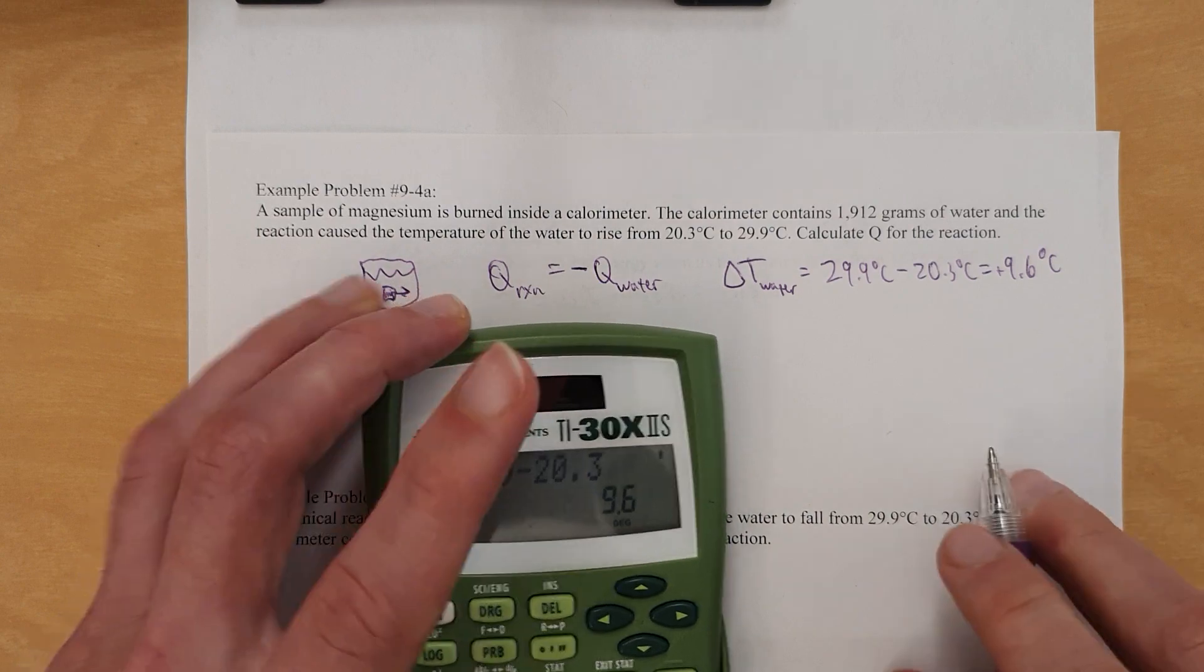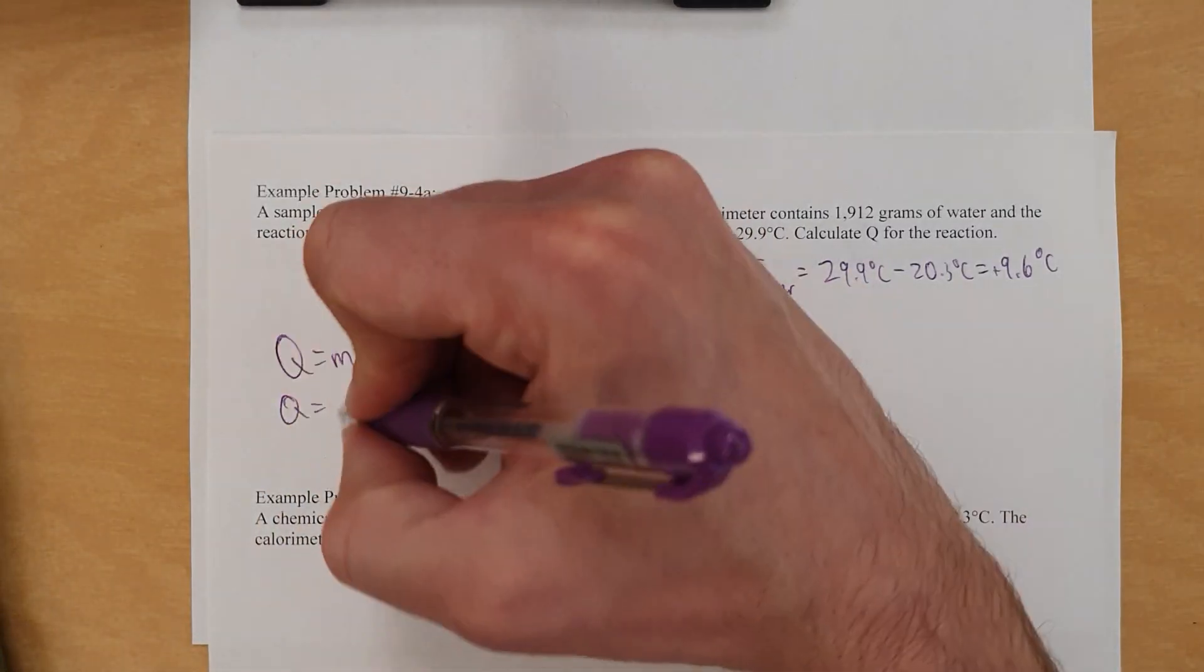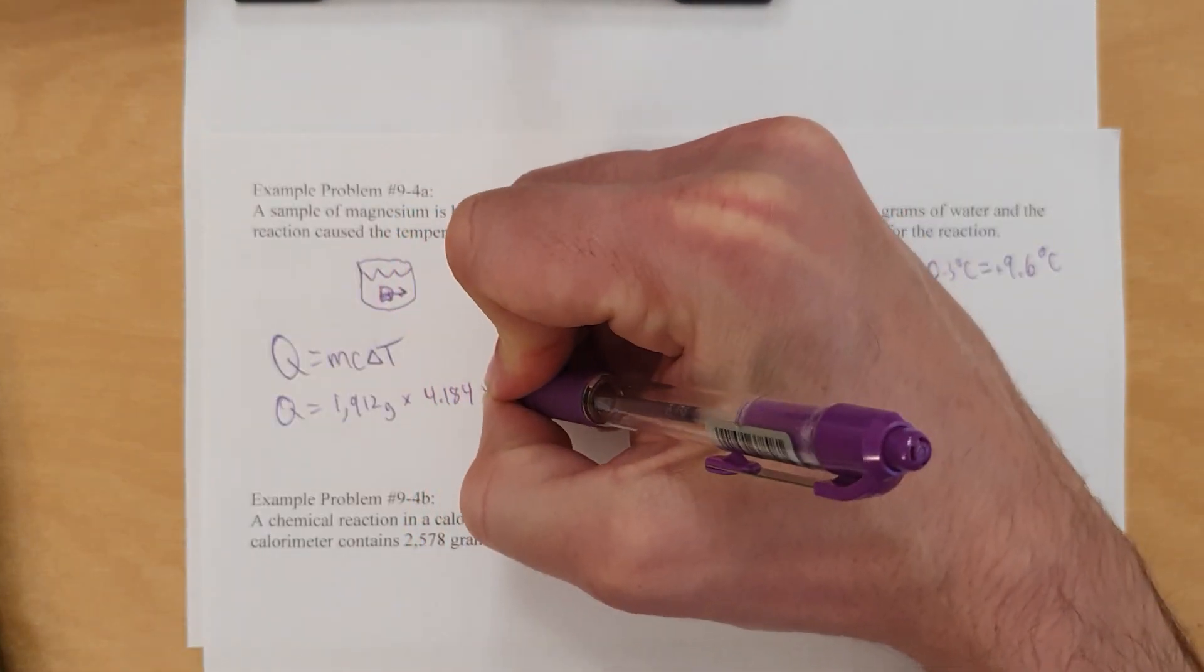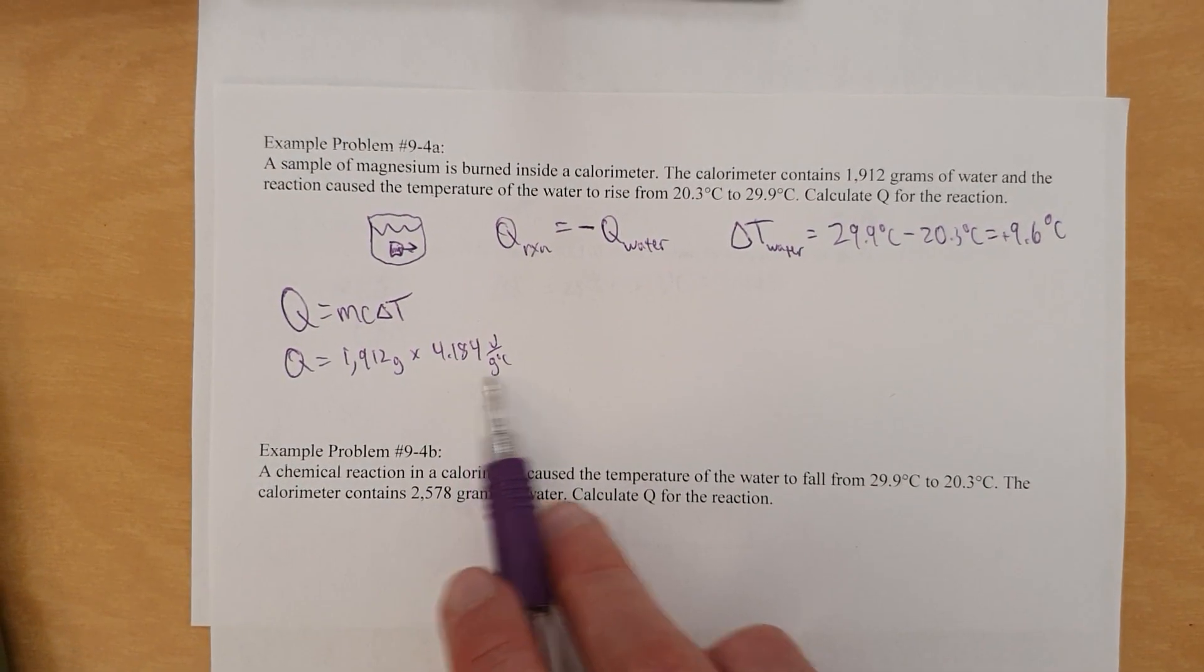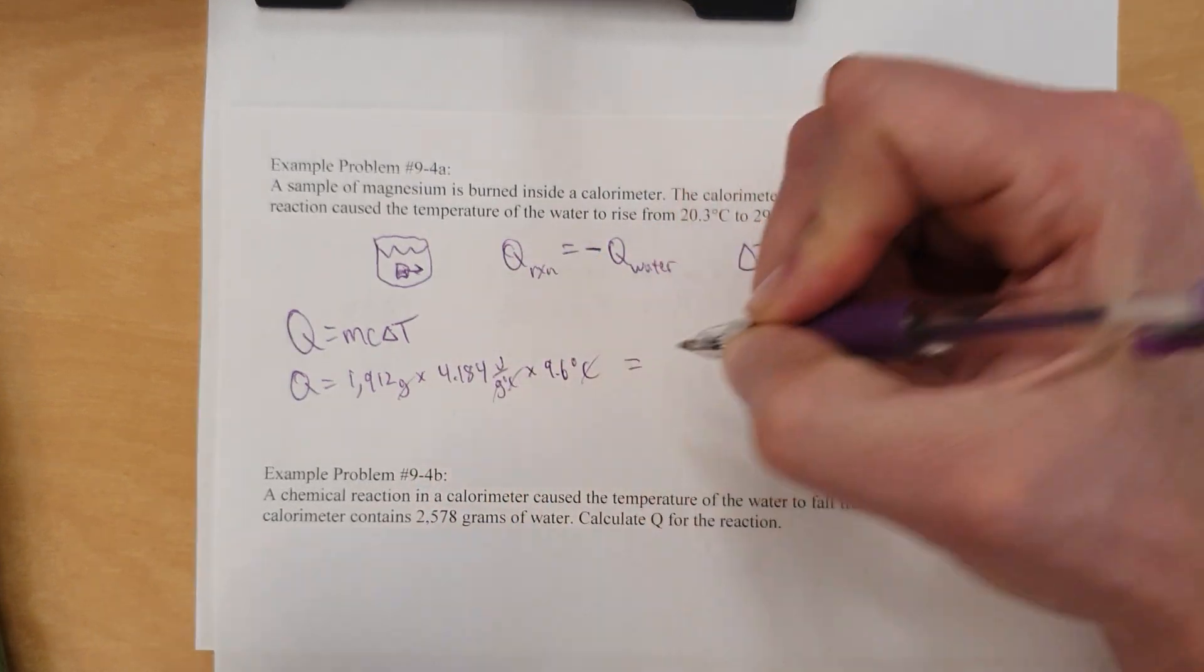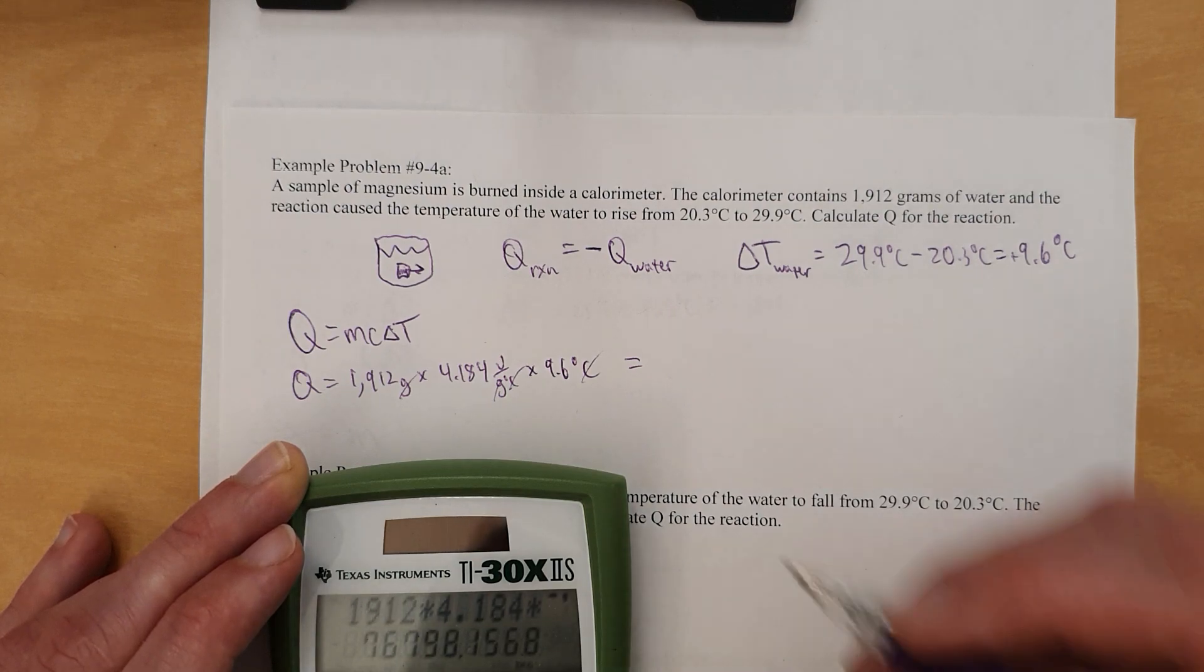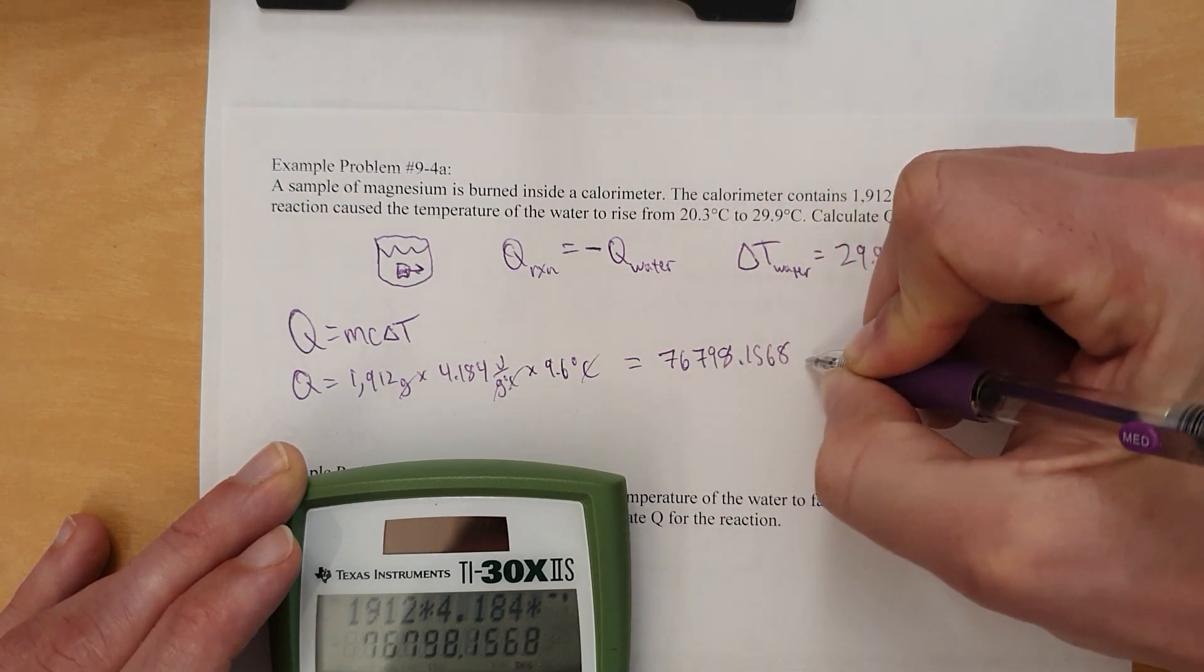So anyway, what are we at? Q for the water equals mass of 1,912 grams times specific heat capacity of 4.184 joule per gram degree Celsius, which, as a reminder, that came from the list. And then this next thing, the delta T is up there, times 9.6 degrees Celsius. So degrees Celsius cancel degrees Celsius. Gram cancels gram. To leave joule is the answer. Hooray, that's good. And we get 1912 times 4.184 times 9.6 to make that 76798.1568 joules.